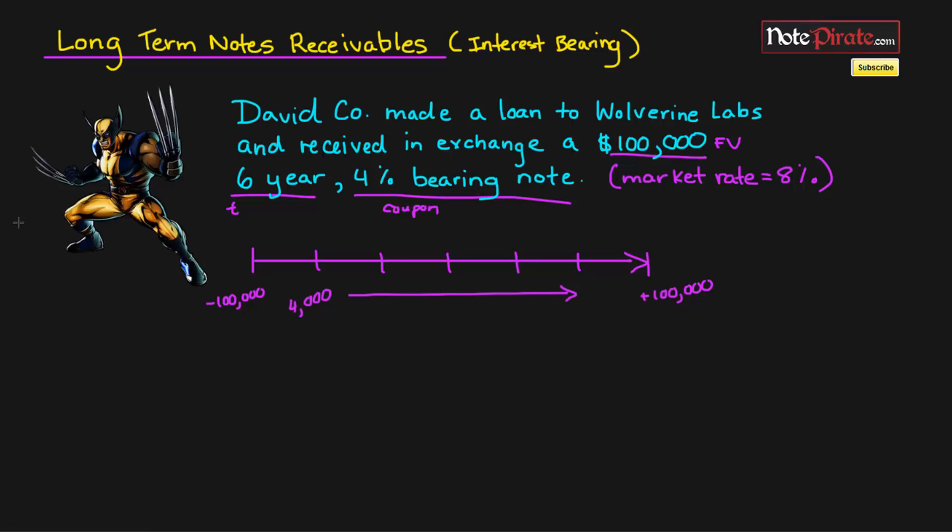We're going to first discount the cash flows for the interest payments. So you can either use annuity tables, but I'm just going to do the calculation since it's a little bit more illustrative.